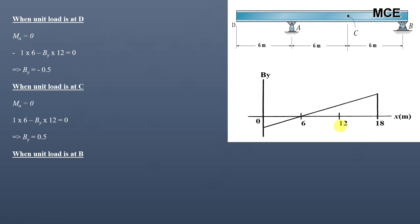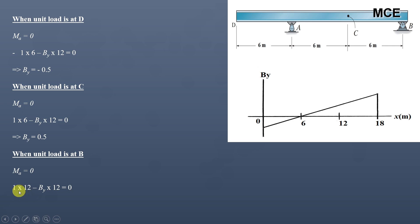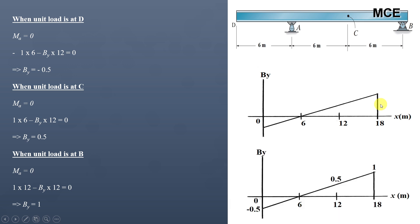To find the ordinate when the unit load is at B, we take the summation of moments about A equals zero. The moment of the unit force about A is 1×12 (clockwise) and the moment of BY about A is BY×12 (anti-clockwise), assuming BY acts upward. This gives BY equal to 1, meaning the ordinate of the influence line for BY when the unit load is at B is 1. This completes the influence line diagram for vertical reaction at B.